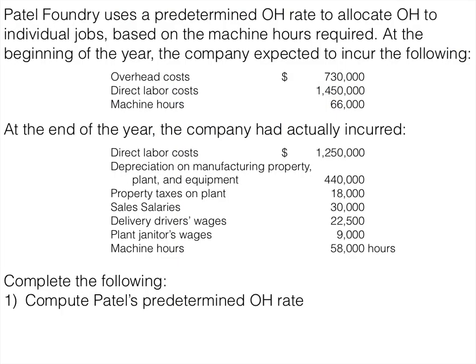Let's look at an example. Patel Foundry uses a predetermined overhead rate to allocate overhead to individual jobs based on machine hours required. At the end of the year the company expected to incur certain costs, and had actually incurred others. Key words to watch: overhead is allocated based on machine hours, so that's our allocation base. We also see 'expected,' meaning estimated, and 'actually,' which is the actual data we'll use in the overhead T-account on the debit side.